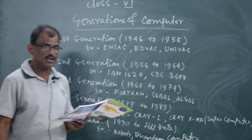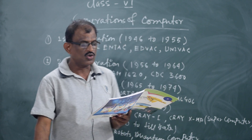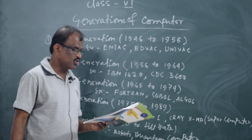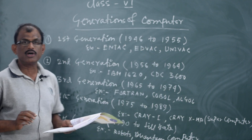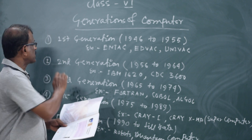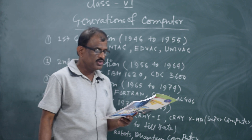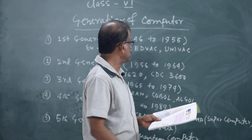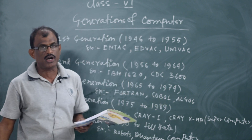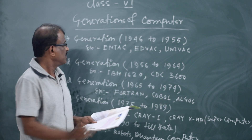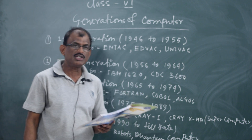The first generation of computers started from 1946 to 1955. These computers mainly depended on batch operating system.